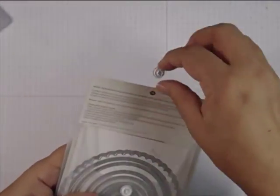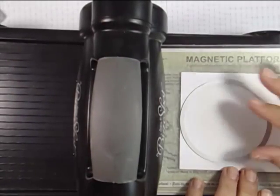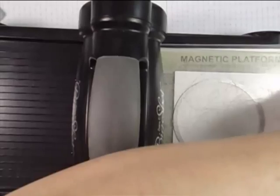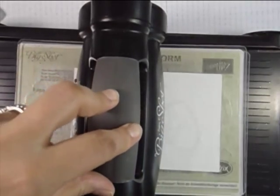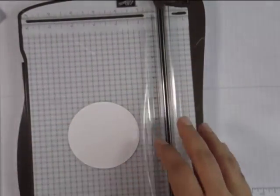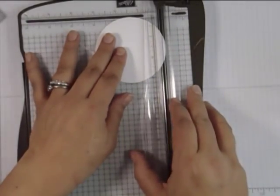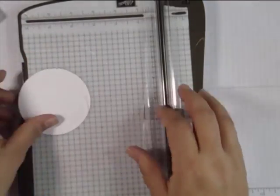These are the circle framelits. I'm going to create a circle for the front. I'm taking the fourth to largest framelit there using the magnet platform. That thing rocks. If you don't have that you've got to get it. It's awesome. Those things do not move. No more having to put post-it notes down and hold it in place.